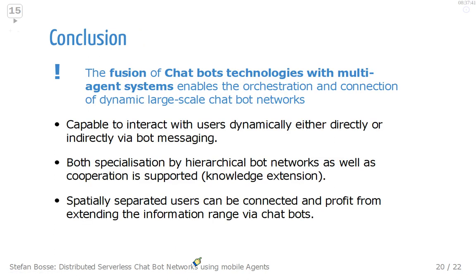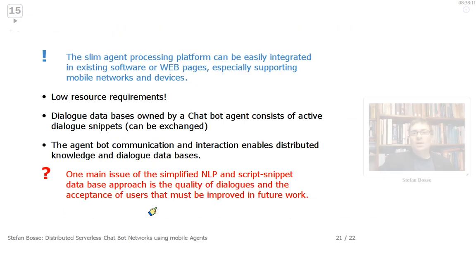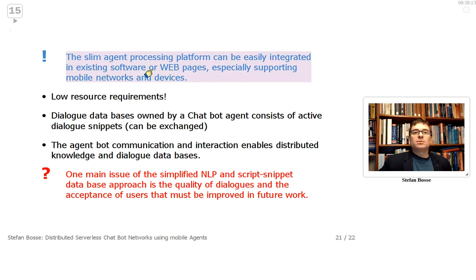In conclusion, the fusion of chatbot technologies with multi-agent systems enables the orchestration and connection of dynamic, large-scale bot networks. They are capable of interacting with users dynamically, either directly or indirectly via bot messaging. Both specialization by hierarchical bot networks and cooperation are supported — meaning knowledge extension — and spatially separated users can be connected and benefit from extended information range via chatbot agents. The slim processing platform can be easily integrated in existing software or web pages.